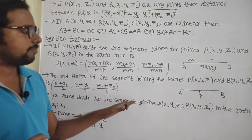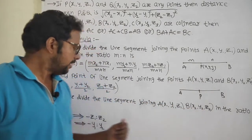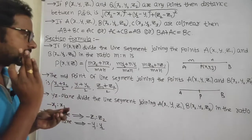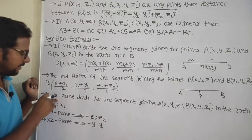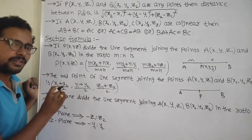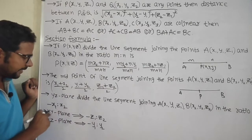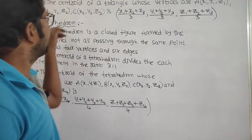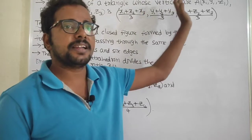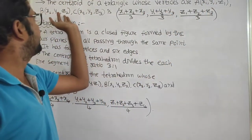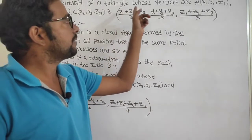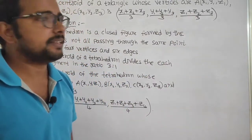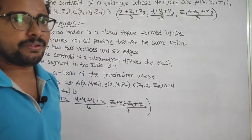The YZ plane divides the line segment joining A(x1, y1, z1) and B(x2, y2, z2) in the ratio −x1 : x2. Similarly, the XZ plane divides in the ratio −y1 : y2, and the XY plane divides in the ratio −z1 : z2. The centroid of a triangle with vertices A(x1,y1,z1), B(x2,y2,z2), C(x3,y3,z3) is ((x1+x2+x3)/3, (y1+y2+y3)/3, (z1+z2+z3)/3).